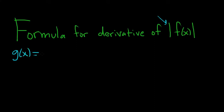So g of x is equal to the absolute value of f of x. To find the derivative of this, we have to assume a couple things. One, we have to assume that the derivative of f is not zero. And two, we have to assume that it's going to be defined everywhere — everything is okay and we can take its derivative.